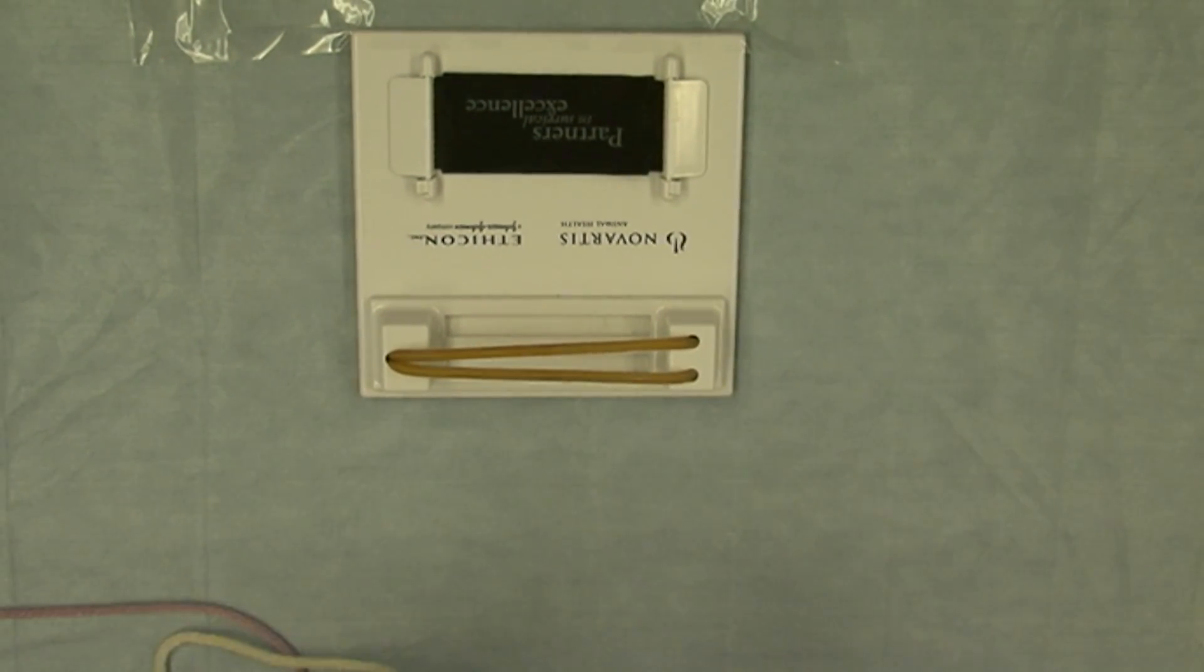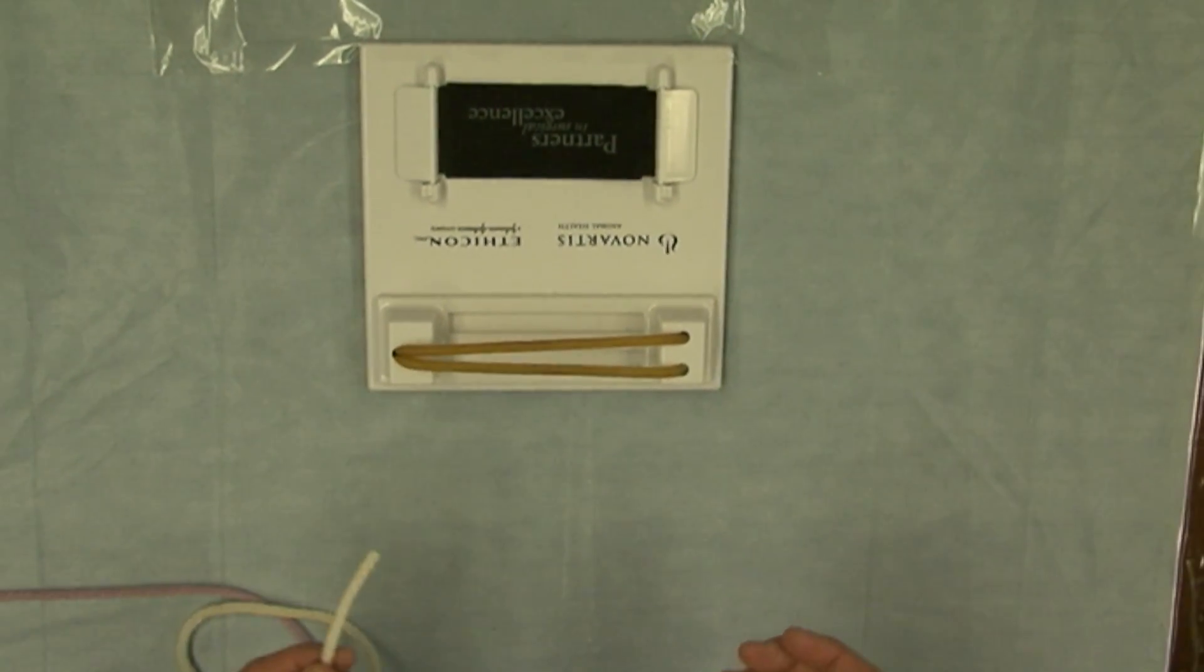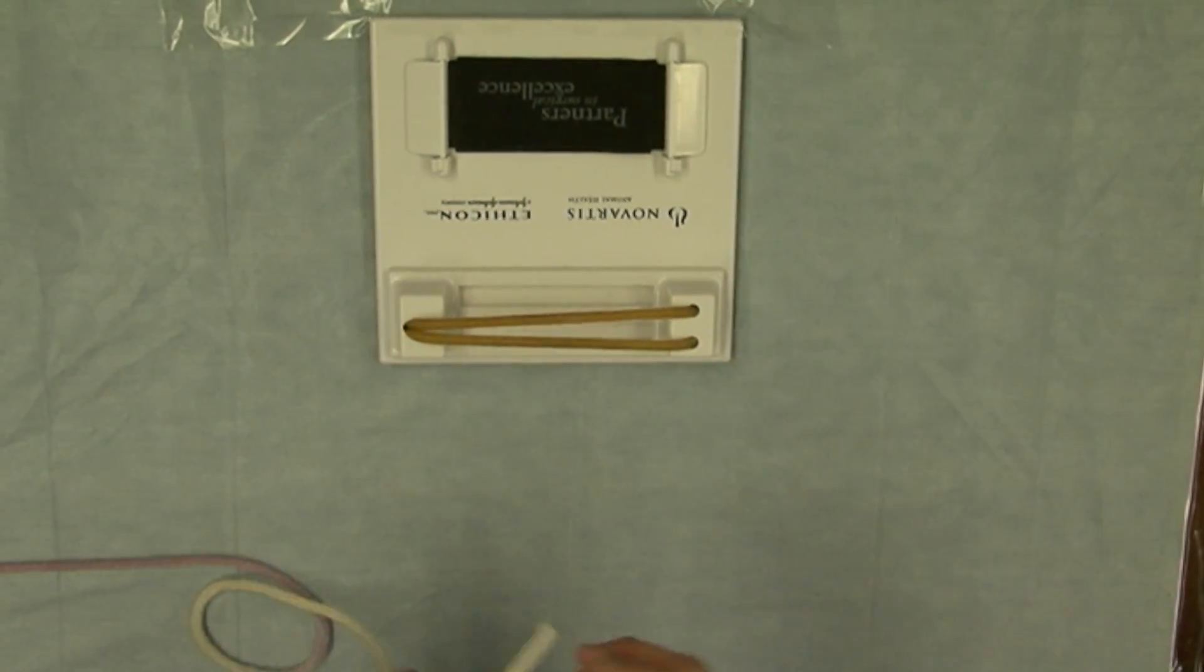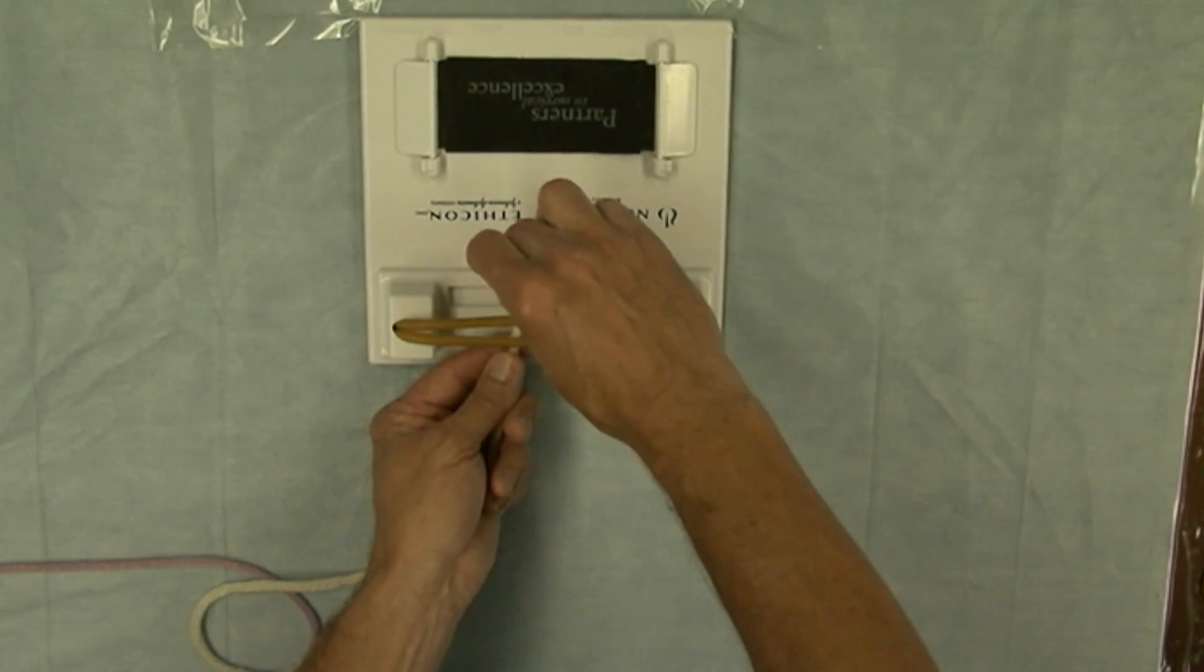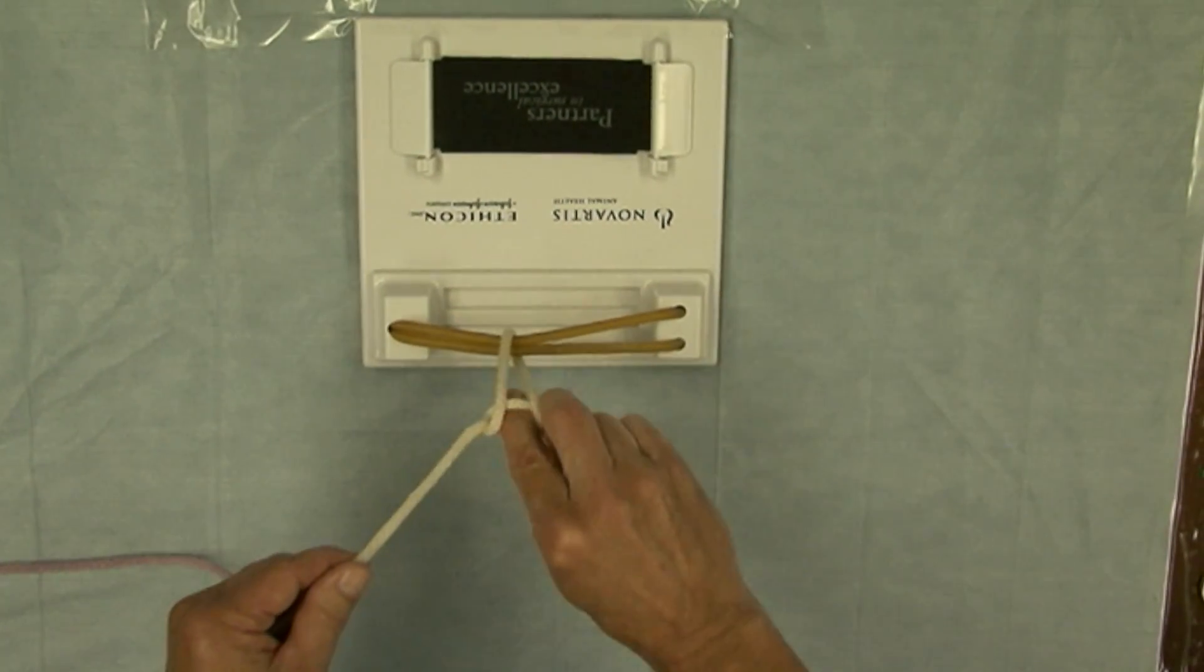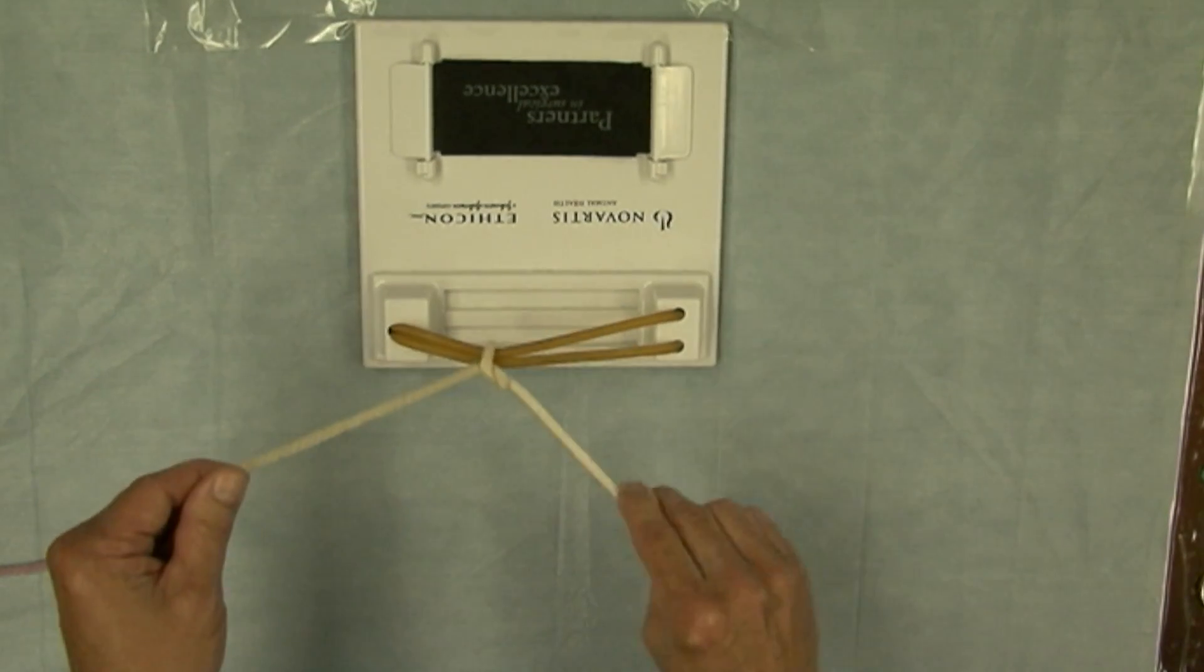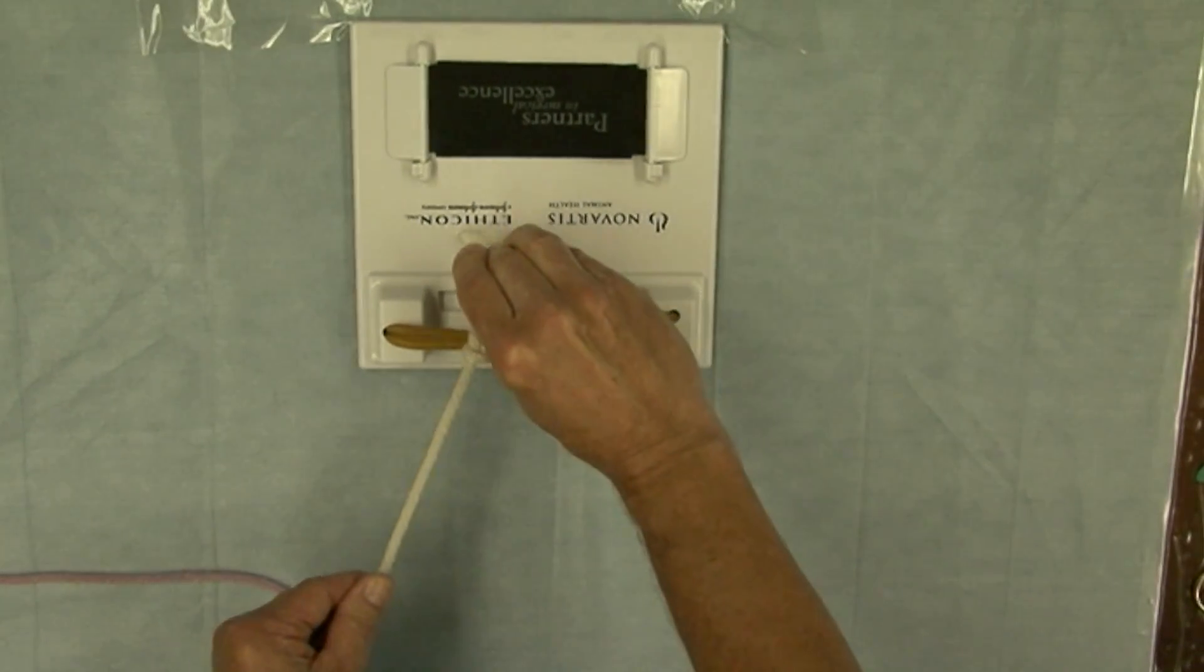There's always a question of why this is called a one hand versus a two hand technique because basically both hands are involved. You'll see as I demonstrate the two hand technique the difference, but let me just show you or demonstrate using one hand only. So this is a one hand square knot using only one hand.